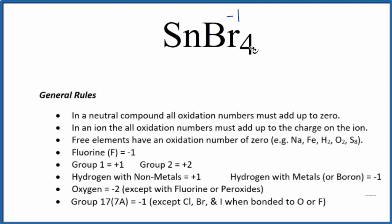We have four of them, so four times negative one — that's minus four. In order for this all to add up to zero, the tin has to be a positive four. So the oxidation number for Sn in SnBr₄ is plus four. That's why we call it tin(IV) bromide.